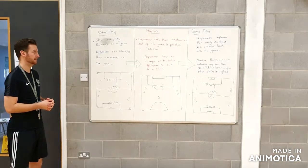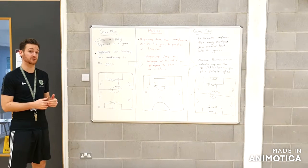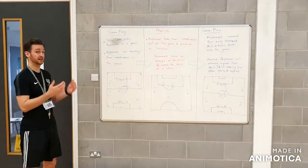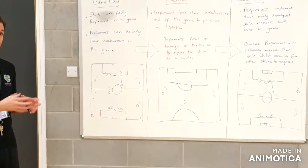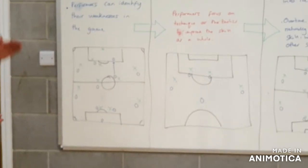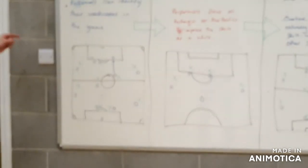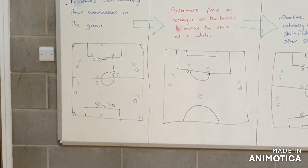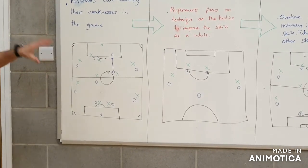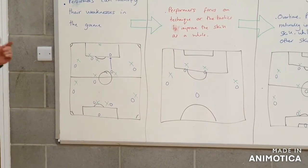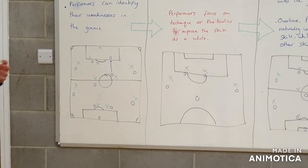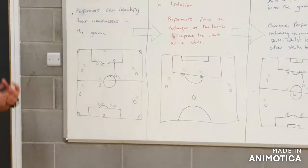For this example, we're thinking about how we can identify a weakness within a game. The very first thing we're going to do is look at gameplay to allow that weakness to be identified — which in this case is going to be marking. Looking at our pitch, we have the green team defending against the blue team; however, the green team aren't defending very well, which allows the blue team to attack into the greens and score.